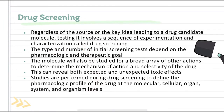The type and number of initial screening tests depend on the pharmacologic and therapeutic goal. The molecule will also be studied for a broad array of other actions to determine the mechanism of action and selectivity of the drug. This can reveal both expected and unexpected toxic effects. Studies are performed during drug screening to define the pharmacologic profile of the drug at the molecular, cellular, organ, system, and organism levels.